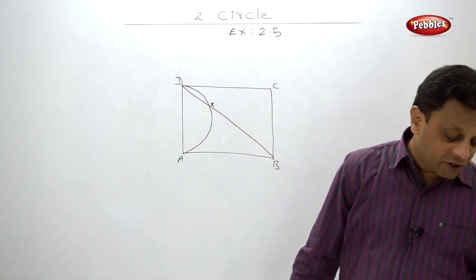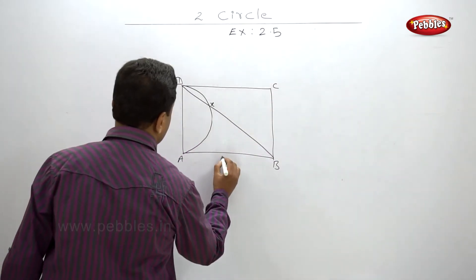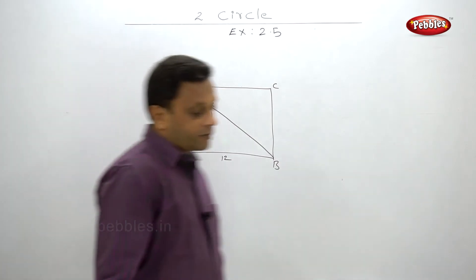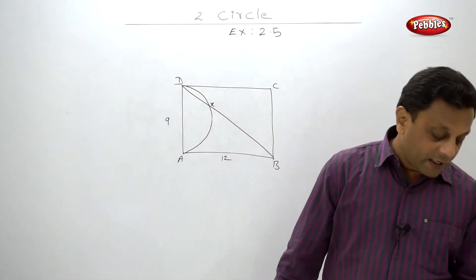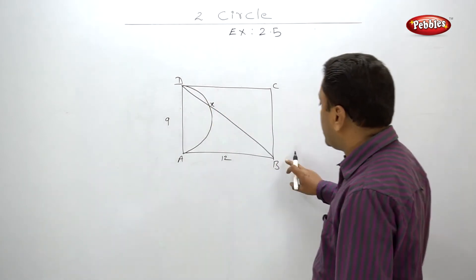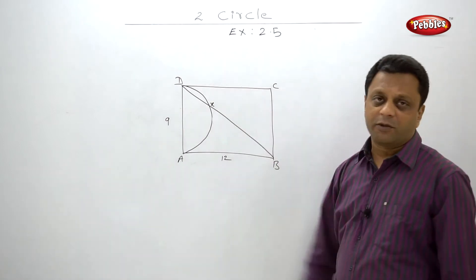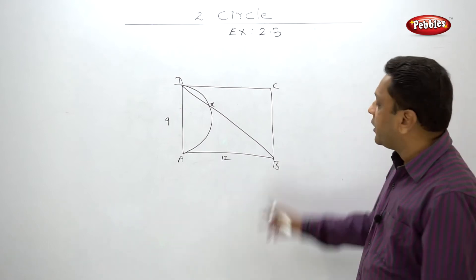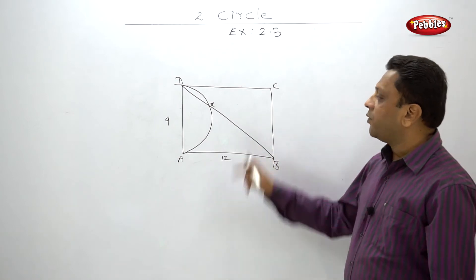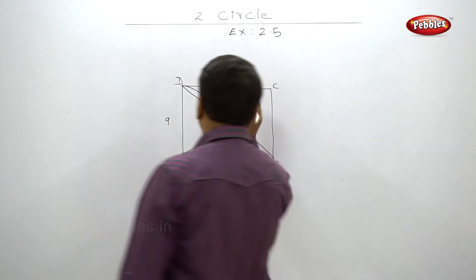If AB is 12 cm and AD is 9 cm, find the values of BD and BX. Finding BD is very simple — just apply the Pythagoras theorem. Please pause your video and quickly find out the value of BD. BD is 15 cm.